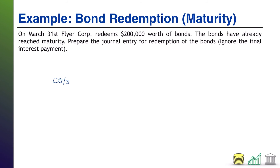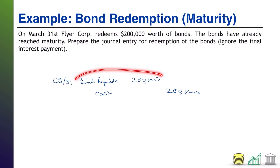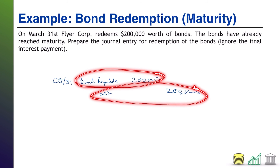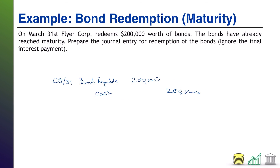In this case, on March 31st, bond payable is the liability going away for $200,000. How's it going away? Well, we're paying it off with cash — $200,000. Because there is no premium or discount, we don't have to worry about getting rid of those. And because there is no premium or discount, there is no opportunity for a gain or loss, because the amount of the bond payable is the cash we are going to pay to get rid of this bond at maturity. So this is it — redemption at maturity. Bond payable goes away, cash for that exact amount, and you're done.